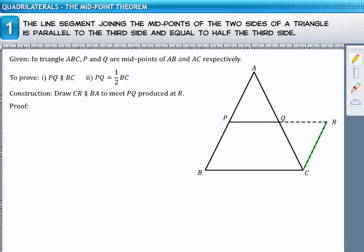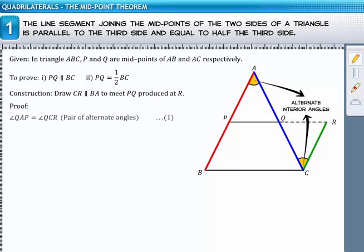By construction, we have drawn CR parallel to BA and from the figure, AC acts as a transversal for them. This implies angle QAP is equal to angle QCR as they form a pair of alternate interior angles. Denote this as equation 1.